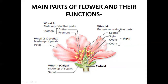The next important part is the pistil, which is the female reproductive part. It consists of the stigma, style, ovary, and ovule. The stigma is the topmost part of a flower that catches pollen grains. The style is the long tube which connects the stigma to the ovary. The ovary contains small eggs called ovules. After fertilization, the ovary becomes the fruit and the ovules grow into seeds.